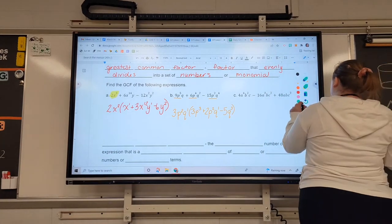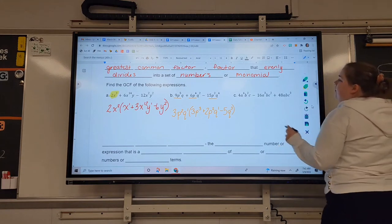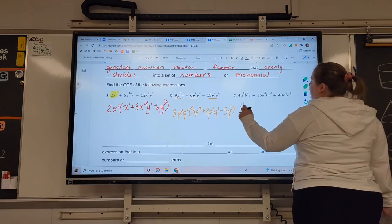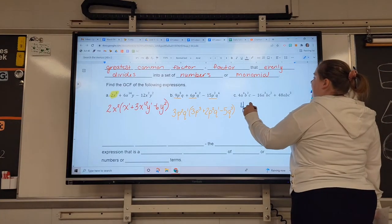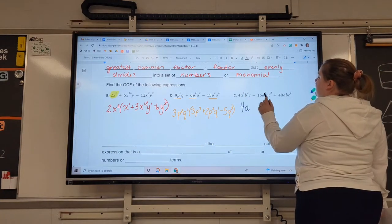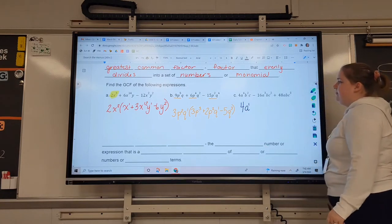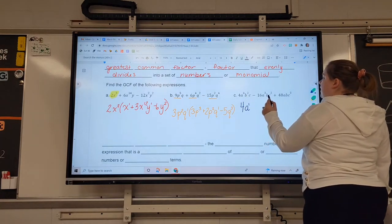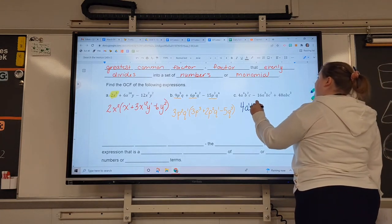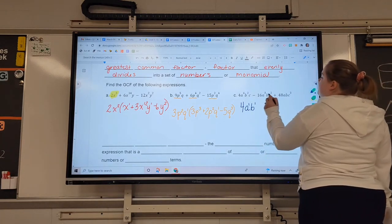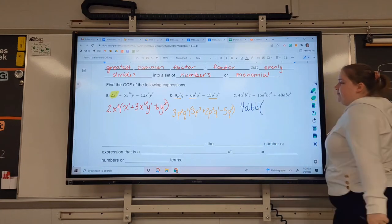One more time, just to make sure we got it. Four, sixteen, and forty-eight can all be divided by four. The most amount of A's we could give up? Well, we have four here, three here, and one here. So that means we're only giving up one. B's, there's two, one, and one, so we can only take one. And c's, there's one, two, and three, so we're only taking one. So we're taking one of each from everybody.